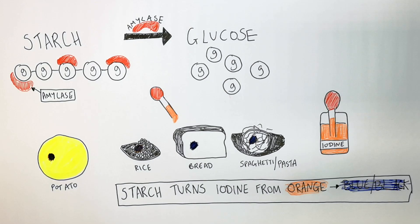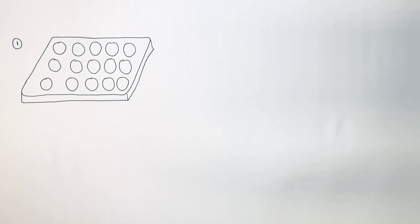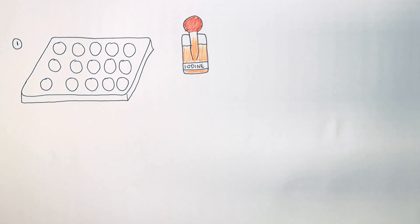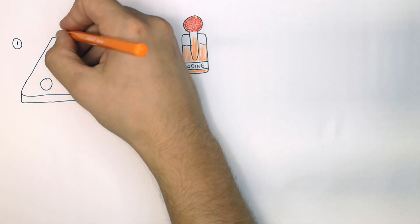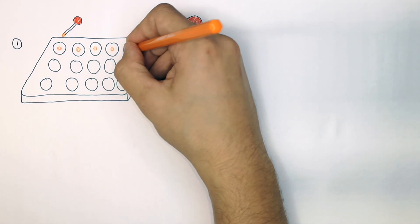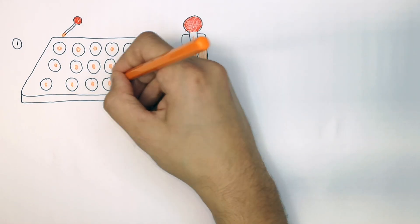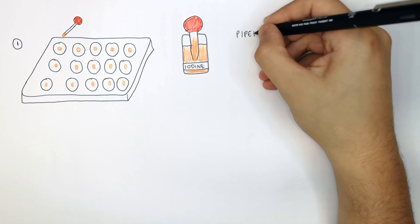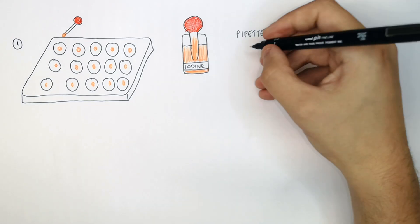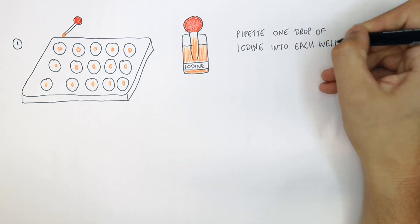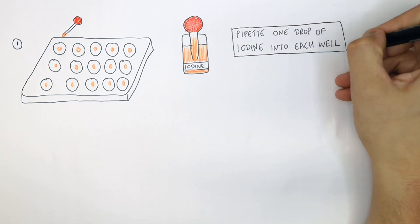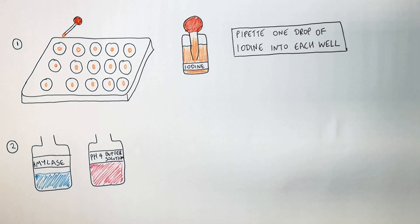You get your well plates and your iodine, then drop one drop of iodine into each of the wells. You must drop only one drop in each well — this is a control variable. Pipette one drop of iodine into each well.